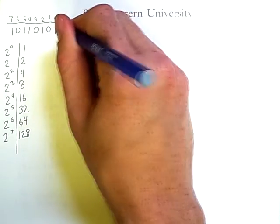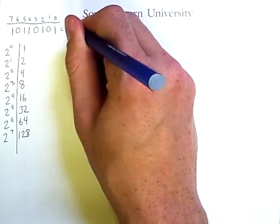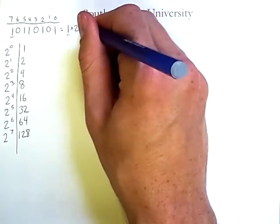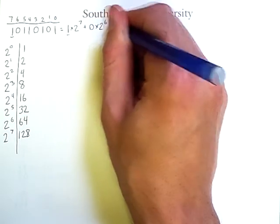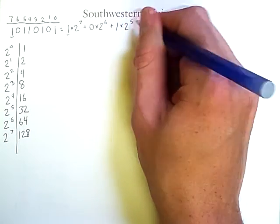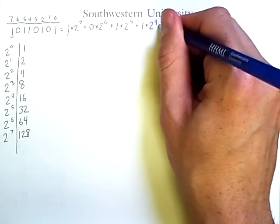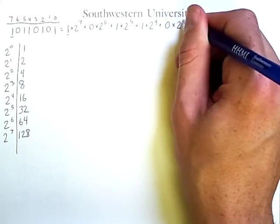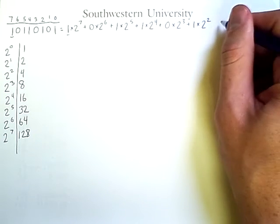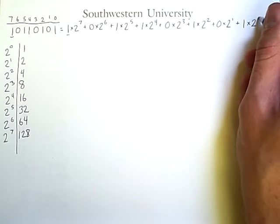So we can take this number and write out that it is equal to 1 times 2 to the 7, because that is the digit in that position, plus 0 times 2 to the 6th, plus 1 times 2 to the 5th, plus 1 times 2 to the 4th, plus 0 times 2 to the 3rd, plus 1 times 2 to the 2nd, plus 0 times 2 to the 1, plus 1 times 2 to 0.